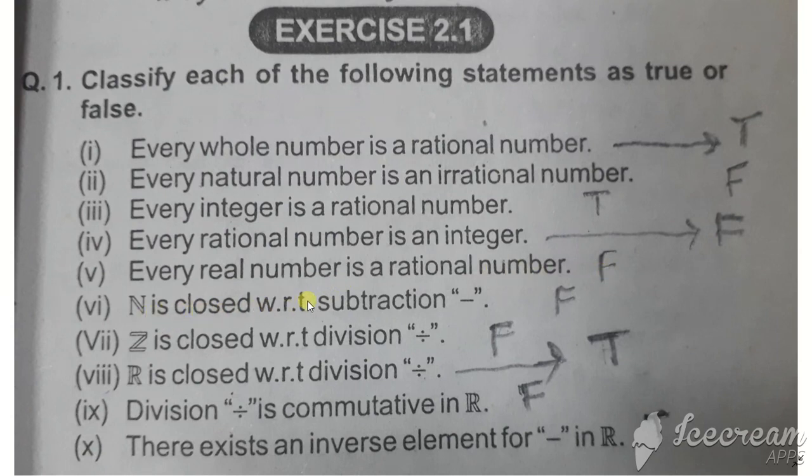Statement six: Natural numbers are closed with respect to subtraction. If you subtract natural numbers, the answer may not be a natural number. For example, 2 minus 5 equals minus 3. Minus 3 is not a natural number. So this is false.